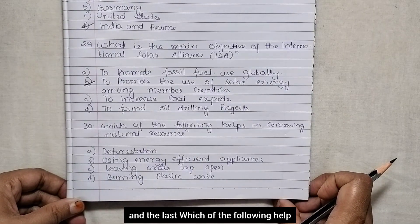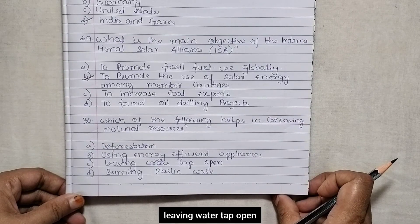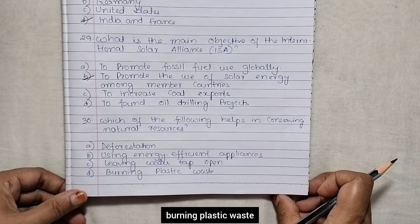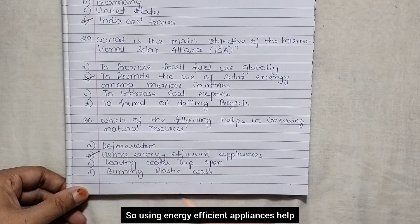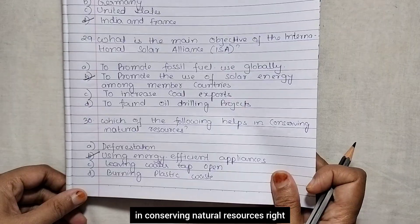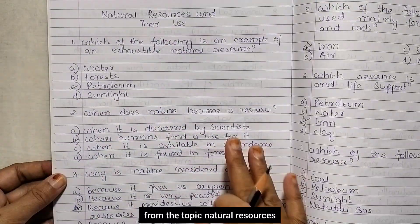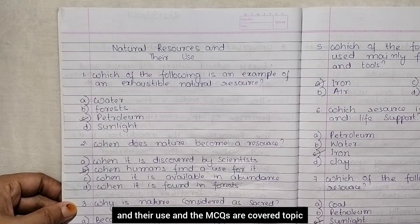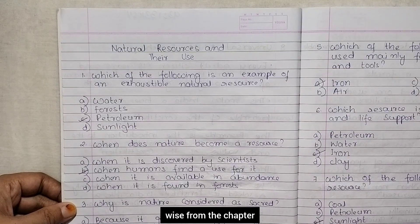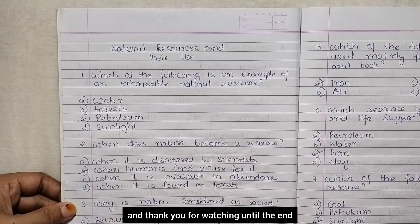Which of the following helps in conserving natural resources? Options are deforestation, using energy efficient appliances, leaving water taps open, burning plastic waste. Using energy efficient appliances helps in conserving natural resources. These are the 30 important question answers from the topic natural resources and their use. The MCQs are covered topic-wise from the chapter. I hope this is going to help you. Thank you for watching until the end.